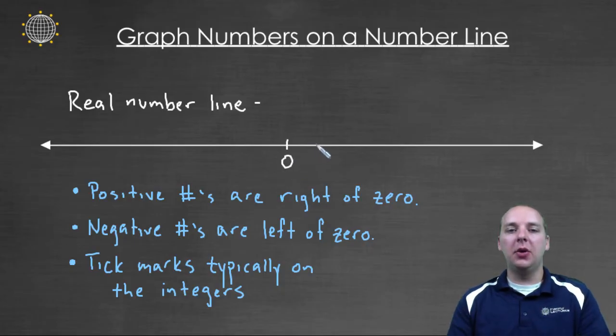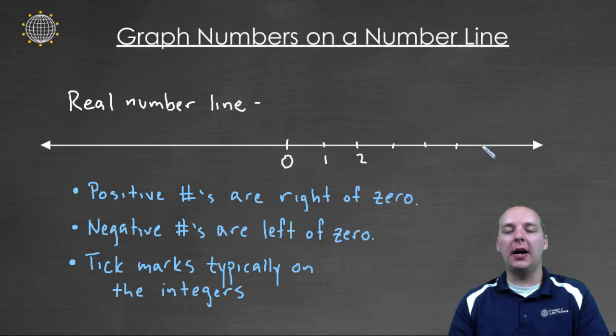So we'll have zero, then we'll have one, and then two, and then three, four, five, six, et cetera. And then, that's not saying that these are the only numbers on the number line, these are just simply points of reference.